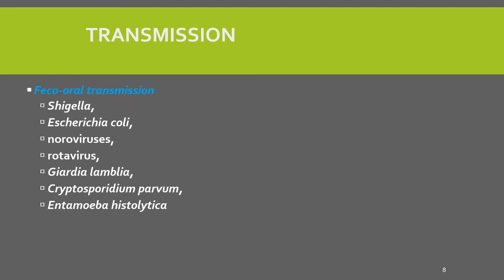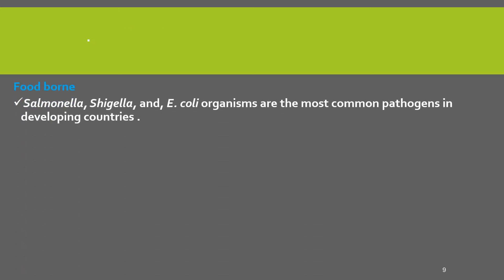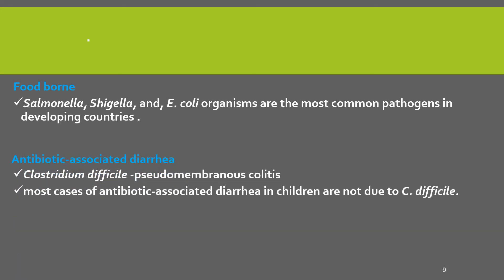When we see the mechanism of transmission, the first mechanism is fecal-oral transmission. For example, Shigella, E. coli, norovirus, rotavirus, Giardia, Cryptosporidium, and Entamoeba histolytica are transmitted through fecal-oral transmission. Cholera is transmitted by contamination of food and water supply. Salmonella, Shigella-like, and E. coli organisms are the most common pathogens in developing countries transmitted through foodborne routes. Antibiotic-associated diarrhea is due to Clostridium difficile or pseudomembranous colitis, and most cases of antibiotic-associated diarrhea in children are not due to Clostridium difficile.